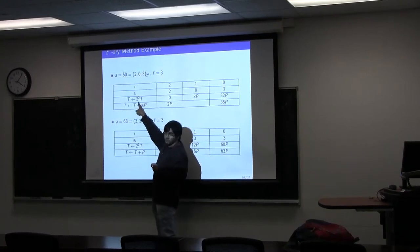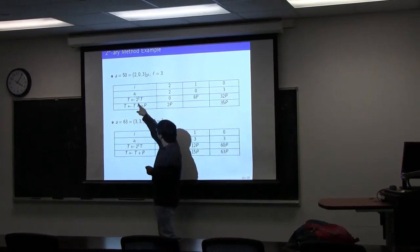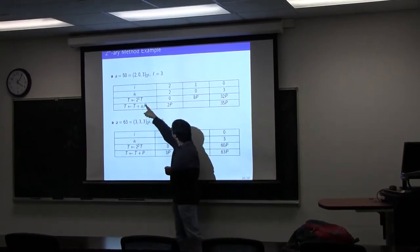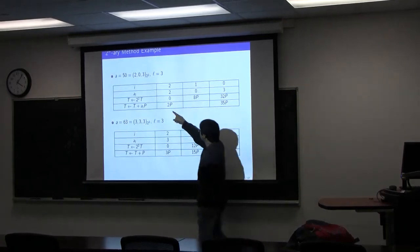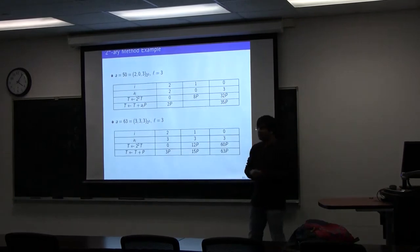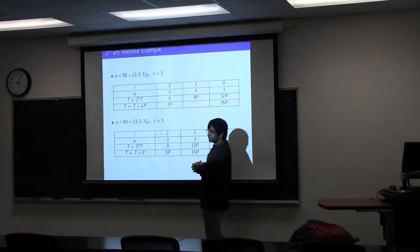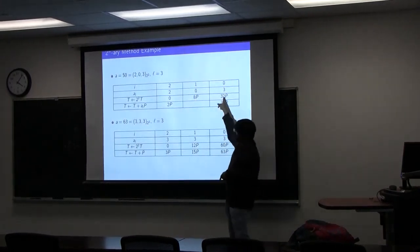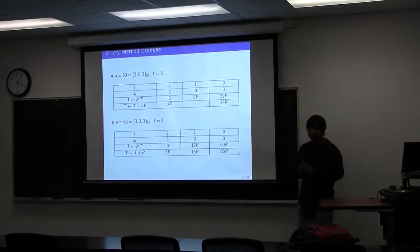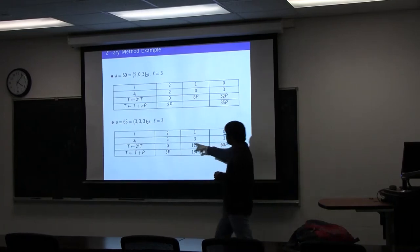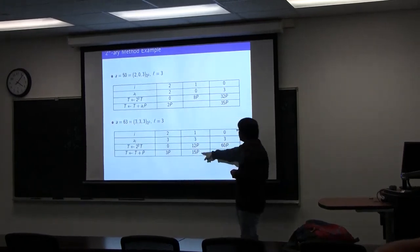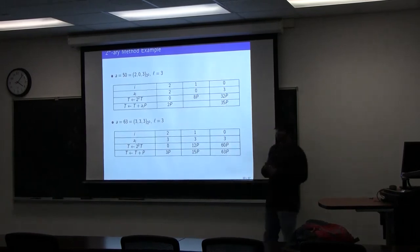Starting with 2P, we compute 2² × 2P = 8P; since the next digit is 0, nothing is added. Multiplying again by 4 gives 32P, and since the next digit is 3, we add 3P to get 35P. For another example: starting with 3P, then 4 × 3P = 12P, plus 3P = 15P, then 4 × 15P = 60P, plus 3P = 63P.